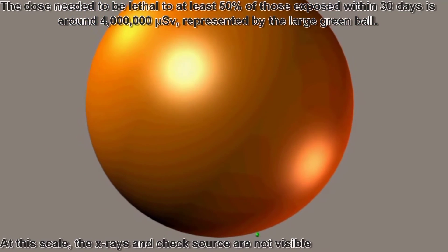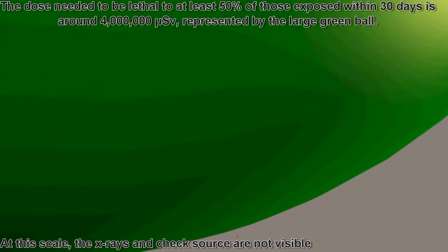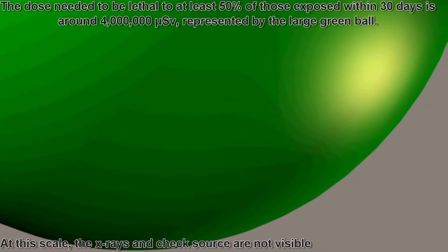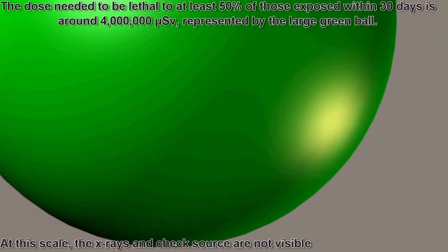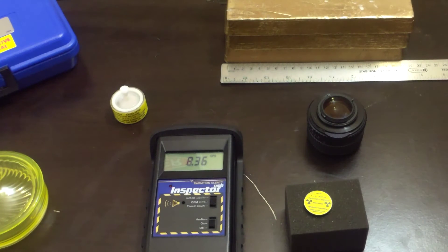And now finally, the dose needed to be lethal to at least 50% of those exposed within 30 days is around 4 million microsieverts. And that's represented by the large green ball. Well, that was a little eye opening, wasn't it? Not quite what you thought.